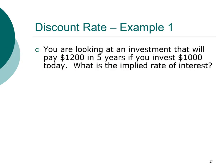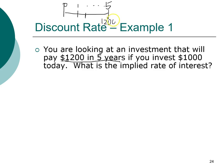Let's look at an example. You have an option to invest, and the investment will pay $1,200 in five years and will cost you $1,000 today. What is the implied rate of return on this investment? Let's put all this information on a timeline. The investment horizon is five years, so $1,200 goes at year five and $1,000 goes at year zero — today.